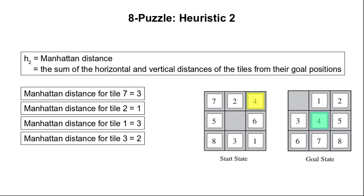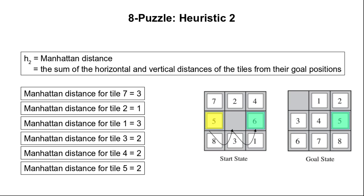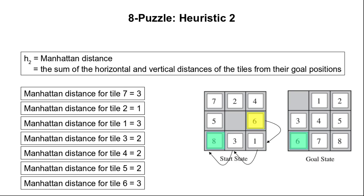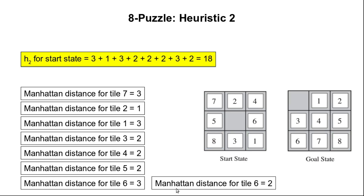For tile 4, we need to move vertically once and horizontally once, so the Manhattan distance is 2. For tile 5, we have to make two horizontal moves, giving a Manhattan distance of 2. For tile 6, we need one vertical move and two horizontal moves, so the Manhattan distance is 3. For tile 8, the Manhattan distance is 2. The Manhattan distance heuristic h2 for the given start state is the sum of all these distances, giving h2 equal to 18.